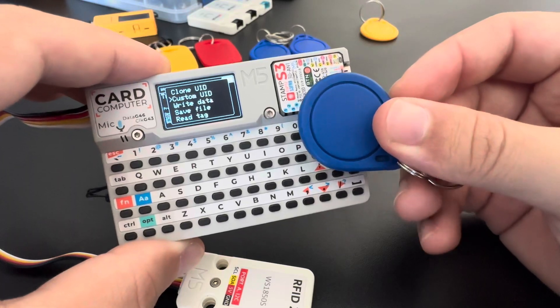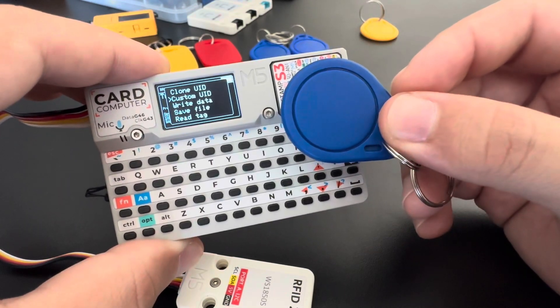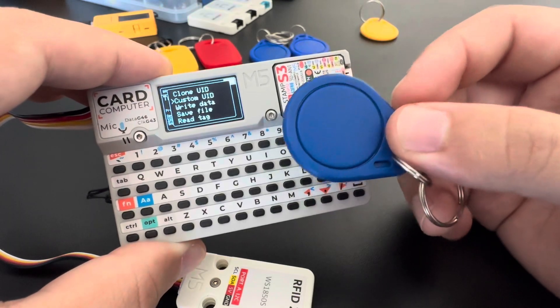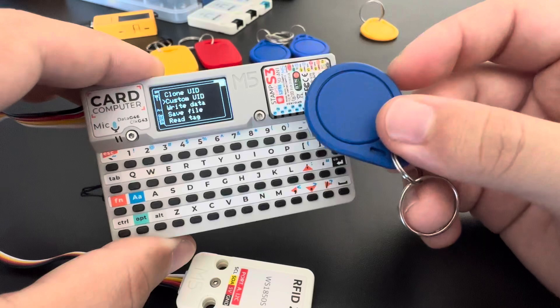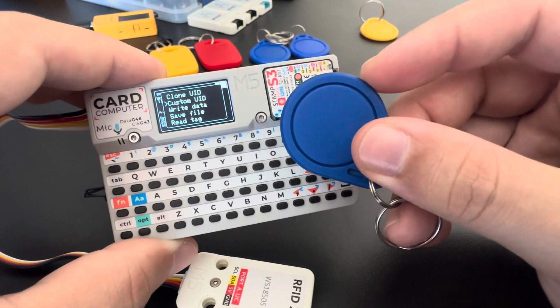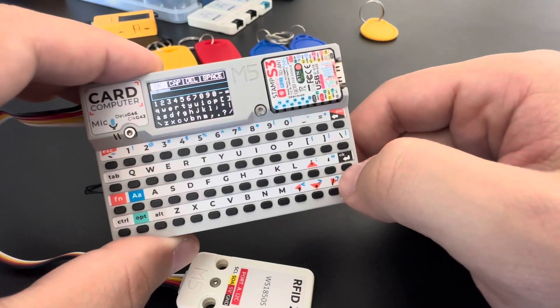So I need to first read the tag because it will check the type of the tag and the size of the UID, because it can be like four bytes or seven bytes depending on the type of the tag. So I need to scan the tag first, and then go to custom UID.